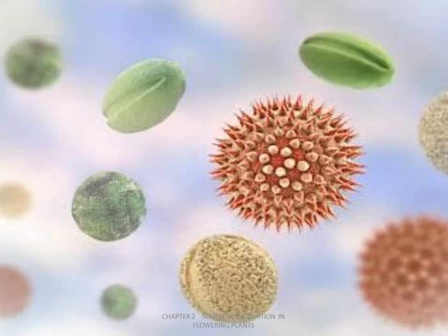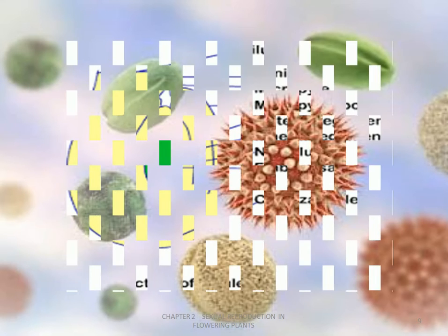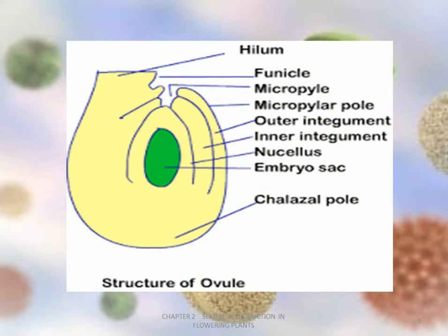Here, let's see the structure of the ovule. All the parts of the ovule are labelled: Hilum, Funicle, Micropyle, Micropylar pole, outer and inner integument, Nucleus, Embryo sac, and Chalazal pole.